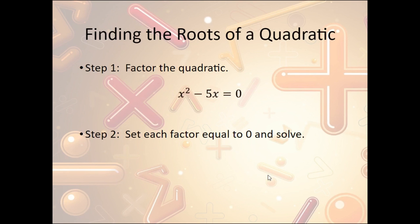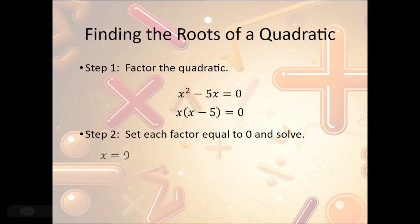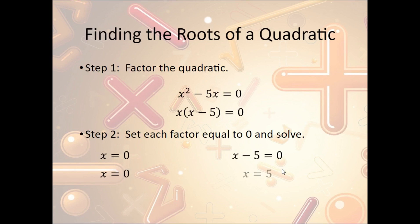Let's look at another example: x squared minus 5x equals zero. We factor by pulling an x out, getting x times x minus 5 equals zero. Now we set each part equal to zero — including the x itself. So x equals zero is one root, and for x minus 5 equals zero, we add 5 to both sides to get x equals 5. So x equals 0 and x equals 5 are the roots for this quadratic.